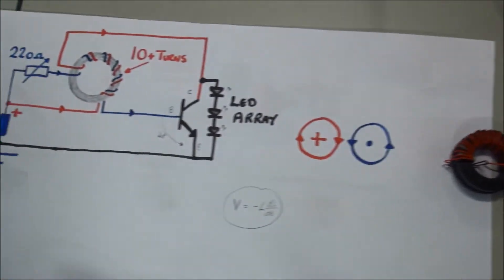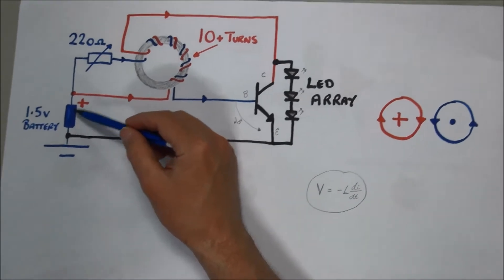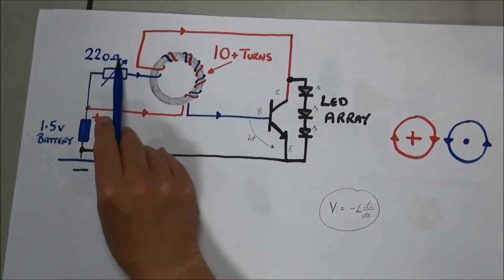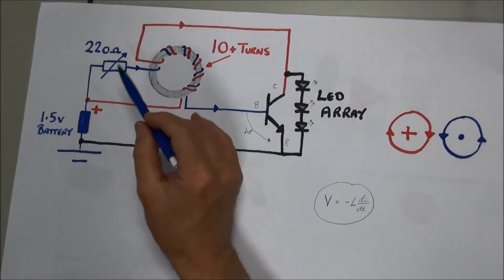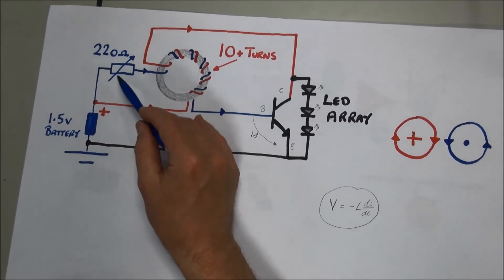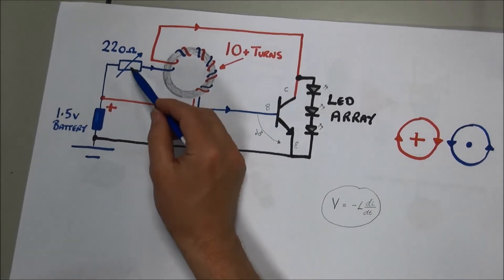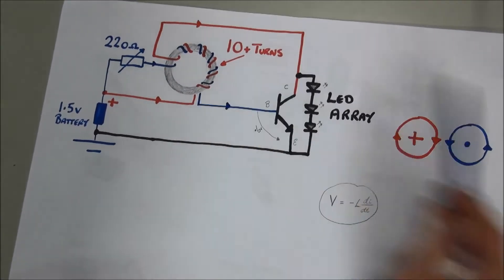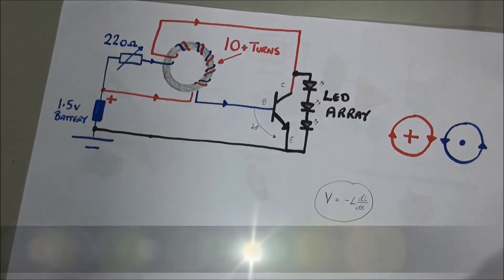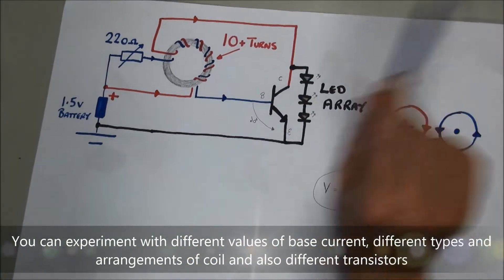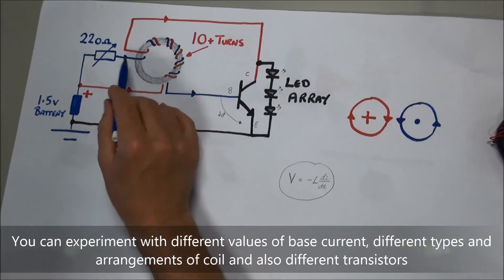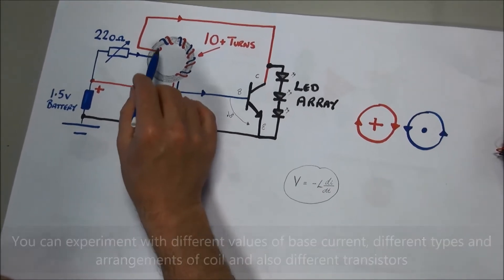So here we have the circuit. We've got a 1.5 volt battery here, we've got a 220 ohm variable resistor. Now, I want to make this quick so I'm not going to demonstrate this, but if you change the value of this resistor, the tone will change and the frequency of the collapsing and rising magnetic field will also change.